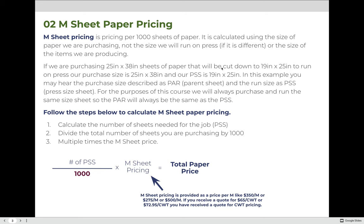When you calculate the M-sheet price, you will do the following: First, calculate the number of sheets that you need. Second, divide the total number of sheets by 1,000, then multiply times the M-sheet price. M in the metric system represents one thousand, so that's what it stands for.